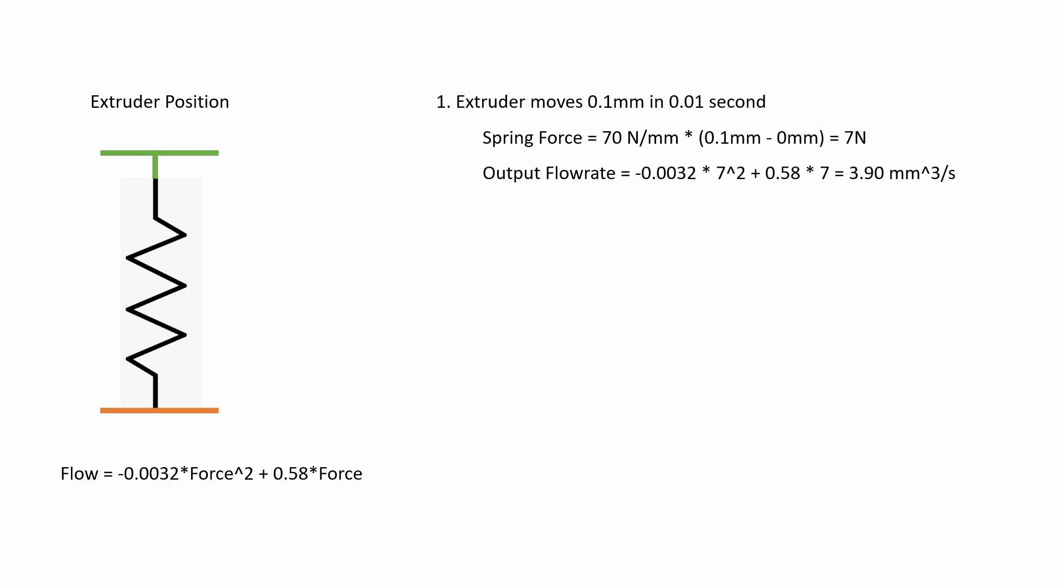My assumption is that it will push about 3.9 cubic millimeters of filament per second out of the nozzle. Now we need to know how much the plastic that is going into the melt zone actually moves.